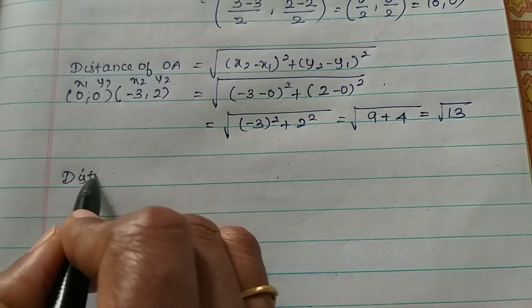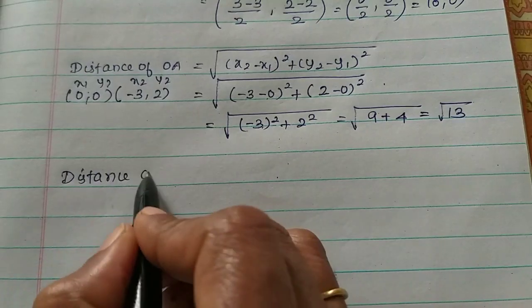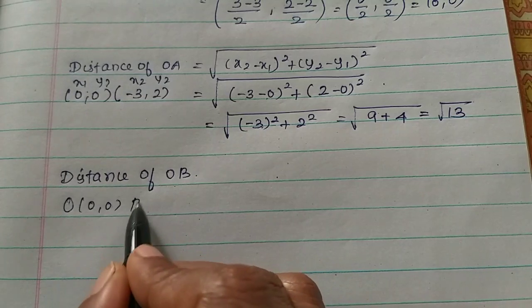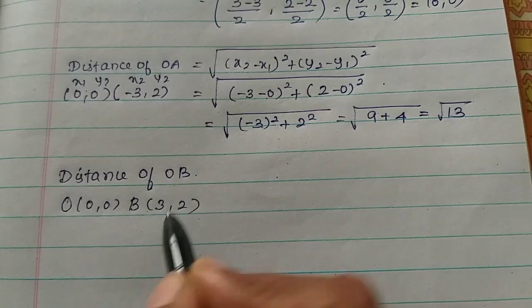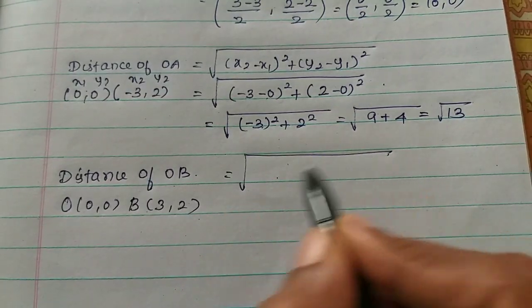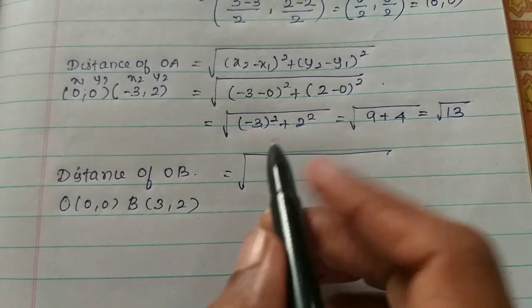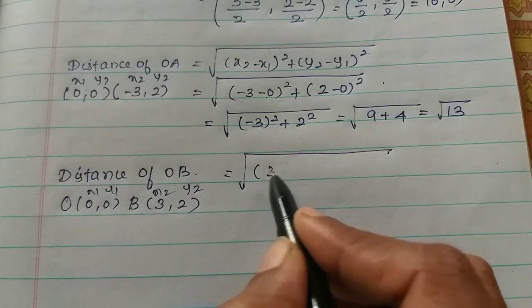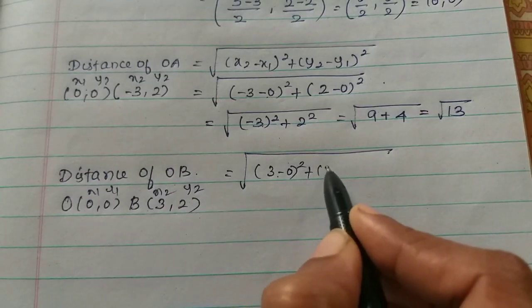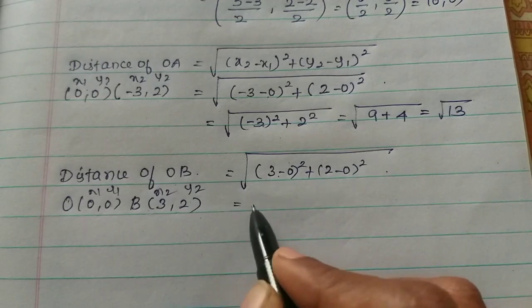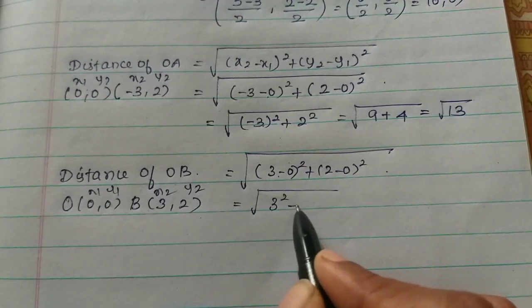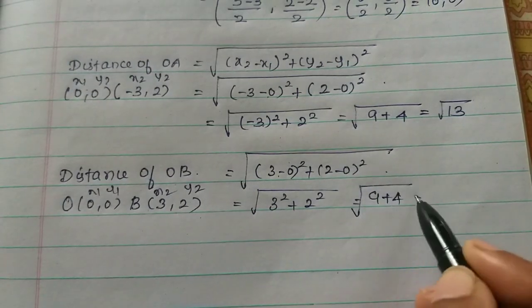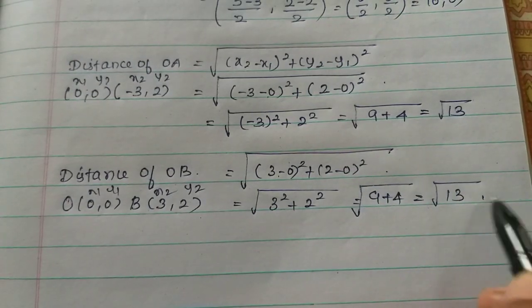Distance OB: O is (0,0) and B is (3,2). Using the distance formula: √[(3-0)²+(2-0)²] = √[3²+2²] = √[9+4] = √13.